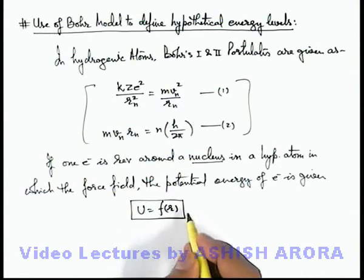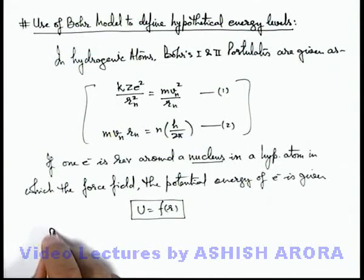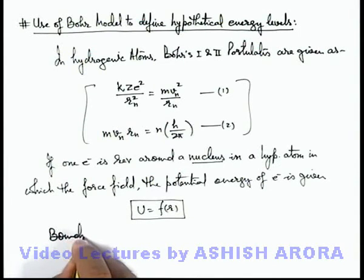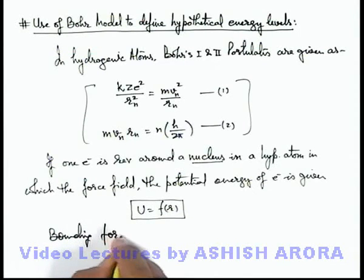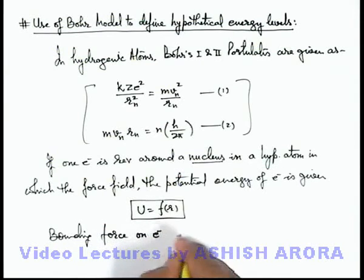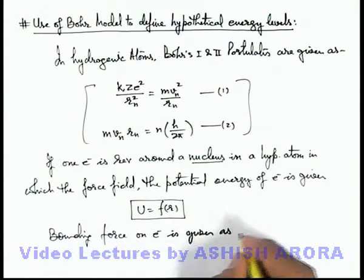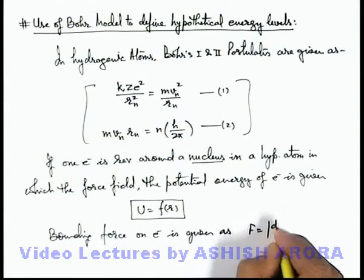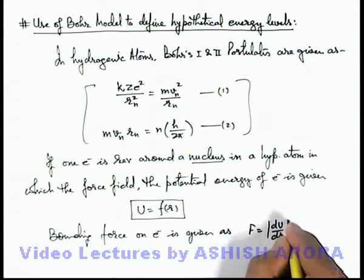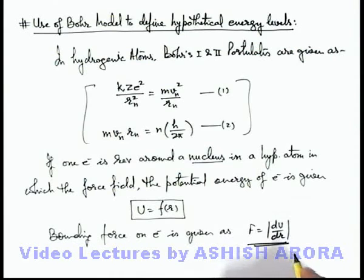If some other expression is given to us, we can directly write that the bounding force on electron is given as the bounding force by nucleus. This force can be written as |dU/dr|, and this is the force which is providing the centripetal force or balancing the centrifugal force on the electron.